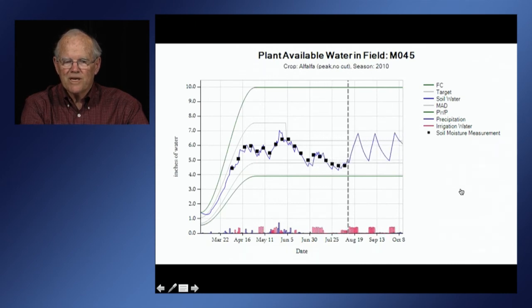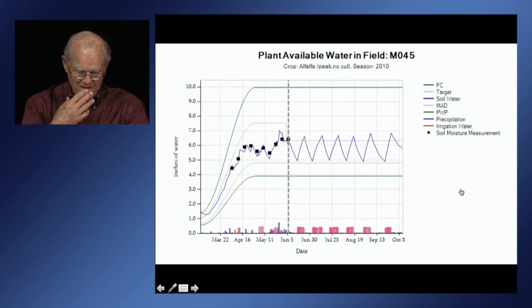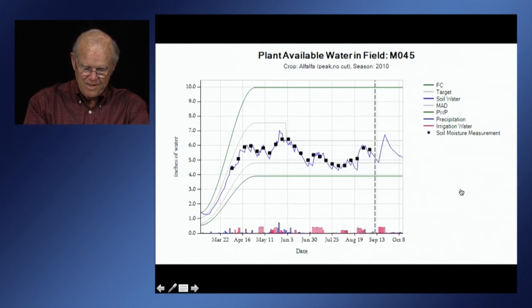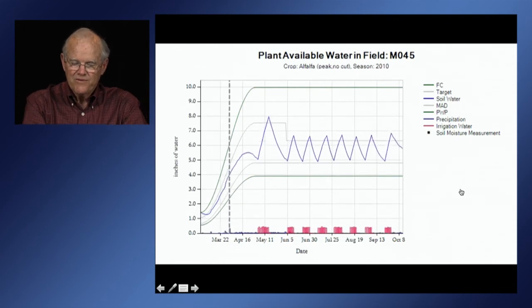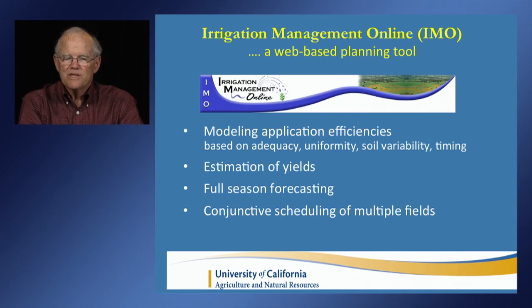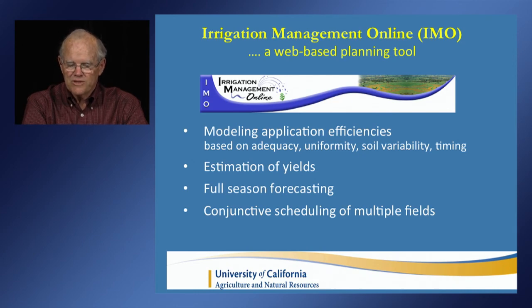IMO gives you a preseason plan and a tool for tracking how well you are following that plan through the season. I should emphasize that IMO is still in a development phase. It is in operation and being used in the Columbia Basin, and it is available for others to use. But at this point it requires a trained user to apply it — it's a complex system with a lot that goes into it.